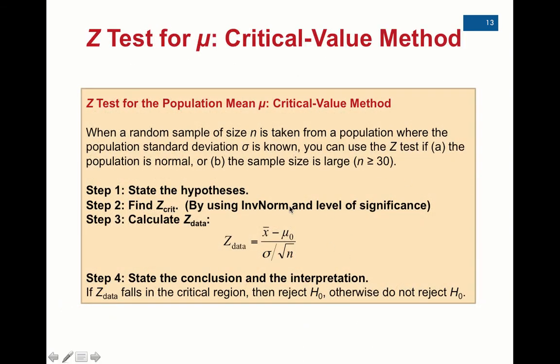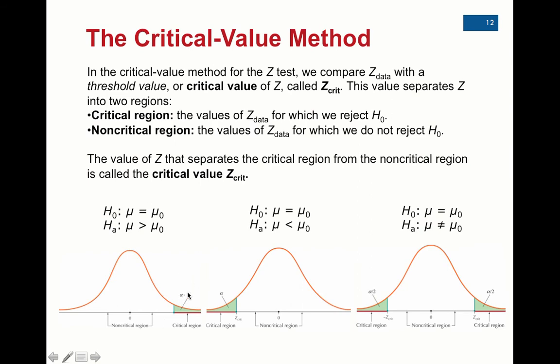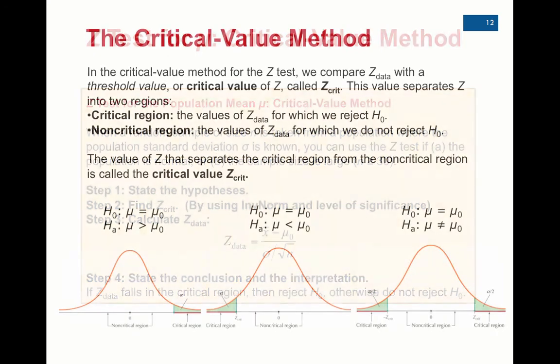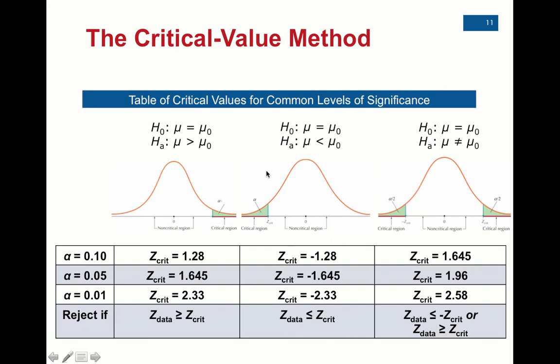So here are the steps that we're going to follow when we do the critical value approach. Once again, you'll notice that, yes, we have a sample size of at least 30. That will guarantee that we're dealing with the bell curve. And the first step, like we said last time, is we state the hypothesis. So we have the null and alternative, and the null states that the mean is equal to some value. Then we'll be given a level of significance, this little alpha thing here. We call it the level of significance. You'll be given that, and then you look up Z-crit by using inverse norm. So that will depend on if it's on the right-hand side, the left-hand side, or two-tail. That's why we are labeling our alternative hypothesis, so that we look up the correct Z-crit, whether it be two-tail, left-tail, or right-tail, because they're different depending on the hypothesis.